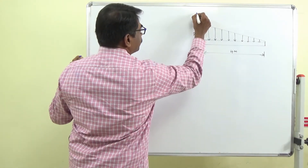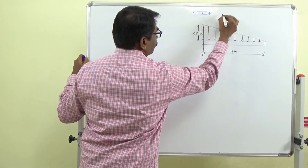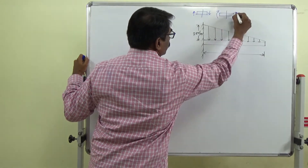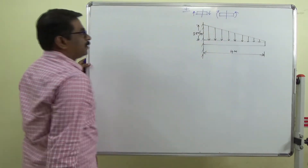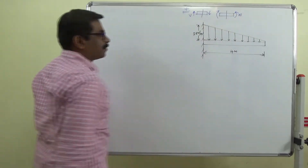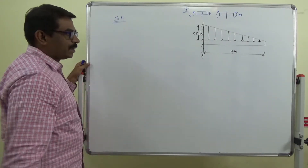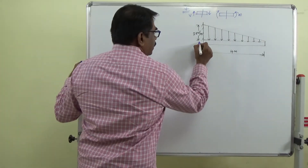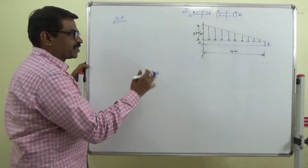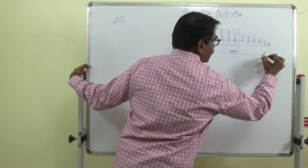The usual sign conventions are noted — these give the positive values for shear force and bending moment. Now for the shear force, let the beam be AB. I will pass a section at distance x from the free end.